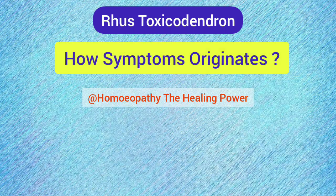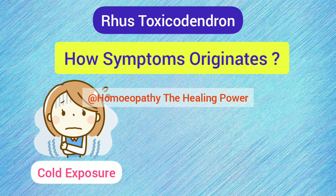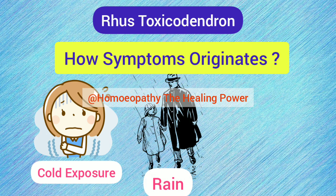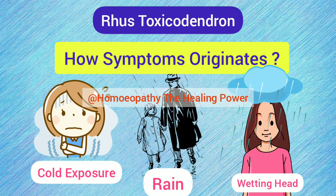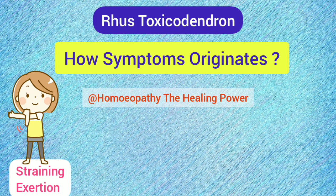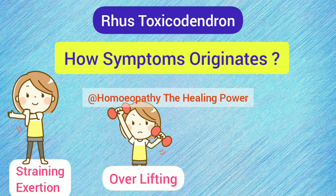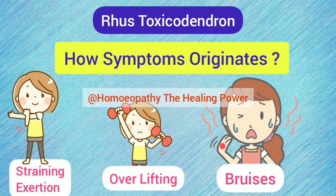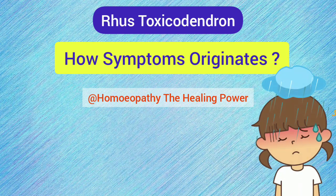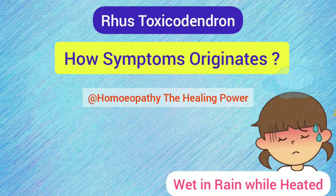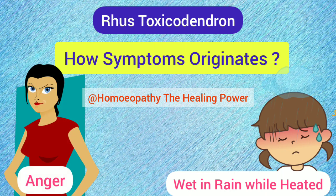Symptoms in Rhus Tox are originated due to exposure to cold, by getting wet in rain, by wetting the head, by over-straining or over-exertion, by over-lifting or raising the arm high, by bruises, by getting wet in rain while overheated or sweating, and by anger. All of these reasons originate the symptoms in the Rhus Tox patient.